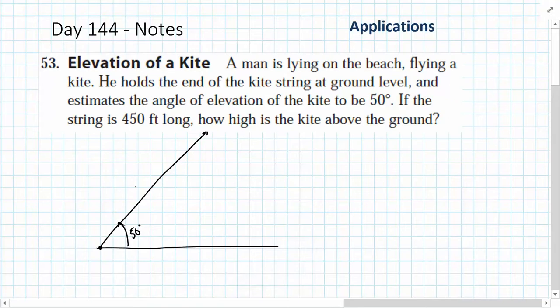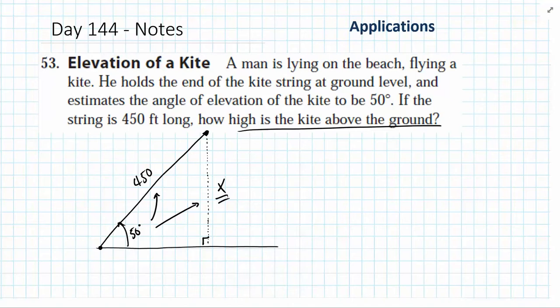And we're told that the string is 450 feet long, so this point here would represent the kite itself. Now if I brought a straight line down from the kite to the ground, that would form a 90 degree angle at the bottom. The question asks us to find how high is the kite above the ground. And now what we have is a right triangle with an opposite side and a hypotenuse. I'm not actually going to solve for x here because this is a problem that might show up on your quiz this week.